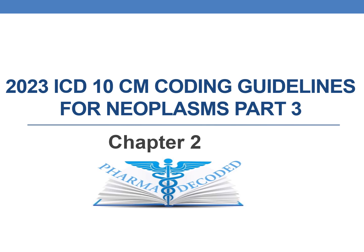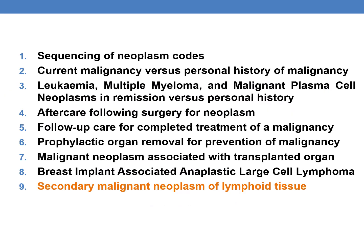Hello everyone. Now let us discuss 2023 ICD-10-CM Coding Guidelines for Neoplasms Part 3. This is the final part. In the current session, we will be focusing on the following topics: sequencing of neoplasm codes, current malignancy versus personal history of malignancy, leukemia, multiple myeloma and malignant plasma cell neoplasms in remission versus personal history, aftercare following surgery for neoplasm, follow-up care for completed treatment of malignancy, prophylactic organ removal for prevention of malignancy, malignant neoplasm associated with transplanted organ, breast implant associated anaplastic large cell lymphoma, and finally the new addition: secondary malignant neoplasm of lymphoid tissue.